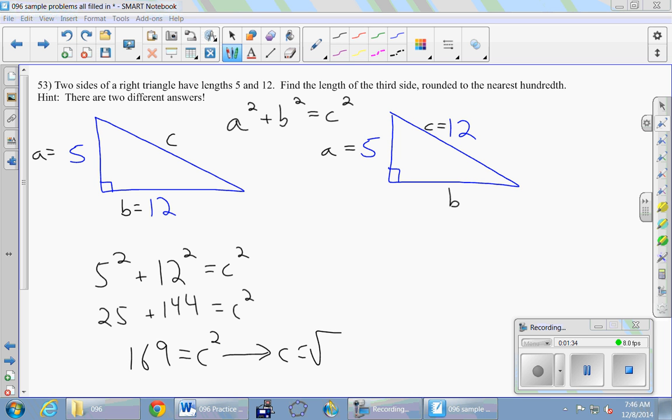Take the square root of both sides. Technically should be a plus or minus, but lengths have to be positive, so there's no minus. And the square root of 169 happens to be a nice number. It's 13.